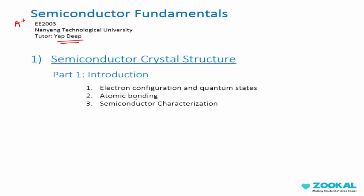Let's look at the first chapter, Semiconductor Crystal Structure. Under this chapter, we'll first do an introduction. We'll talk about what electron configuration is and mention some related info about quantum states. Then we'll talk about atomic bonding, how atoms bond together. Next we'll talk about the characterization of semiconductors. What kind of characteristics do semiconductors have?